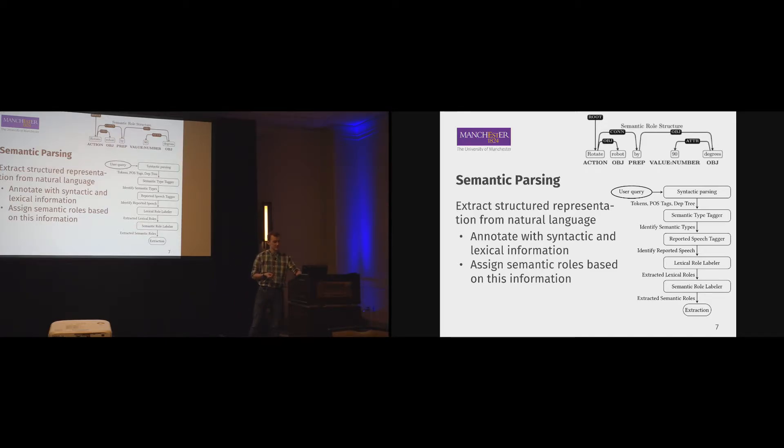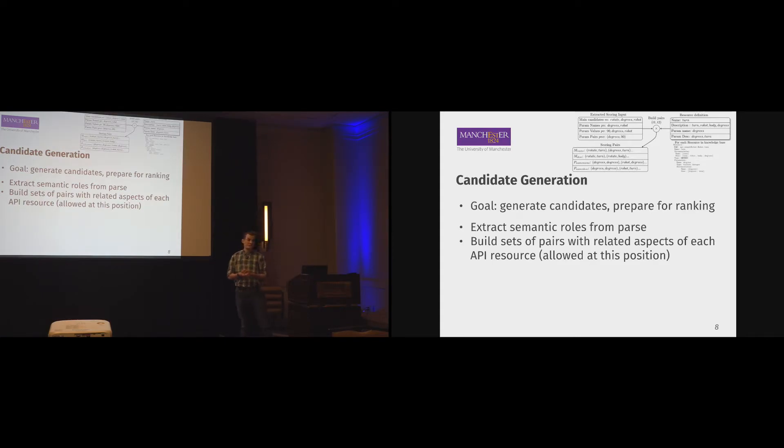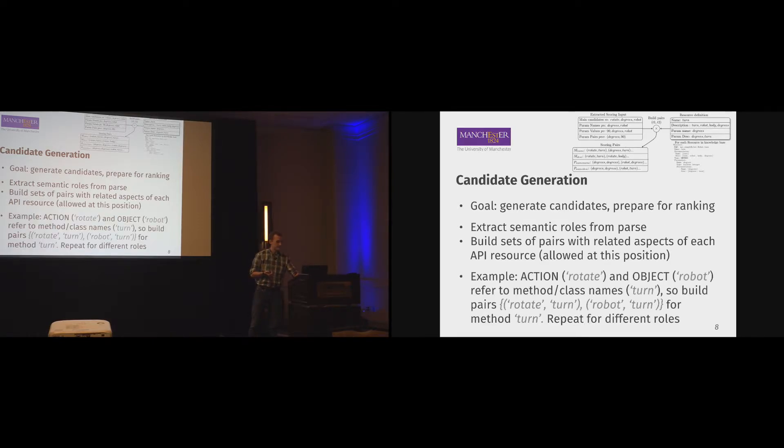Once we have the structured representation, we generate candidate statements. The goal is to generate candidates which make sense based on the code state and prepare them for future ranking. Therefore, we extract the semantic roles from the parse and their relations, and we build sets of pairs with the related aspects of each API resource. That's a bit cryptic, so let's have a look at an example that probably makes it more clear.